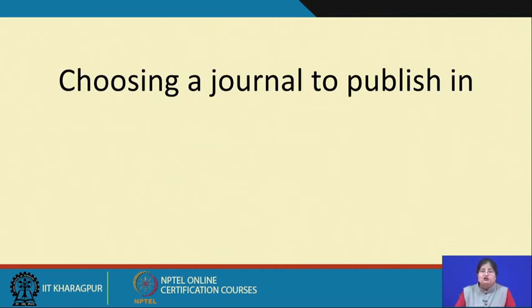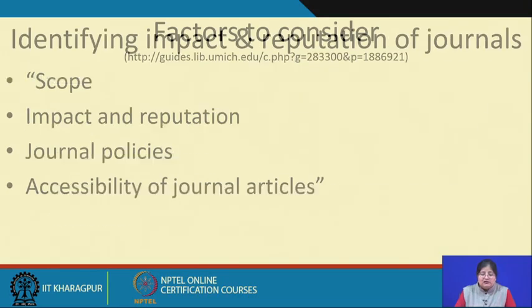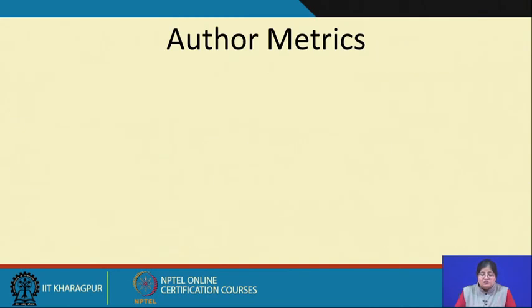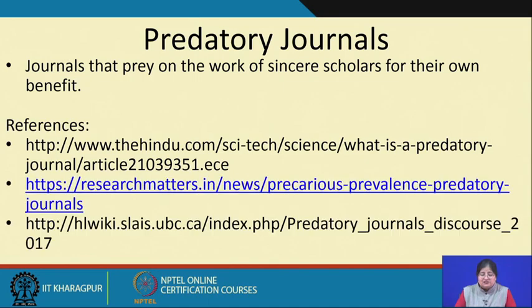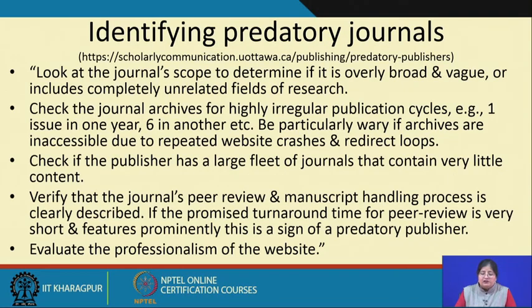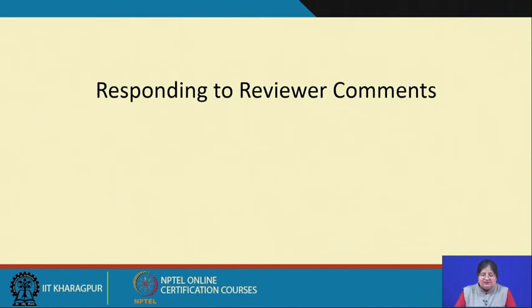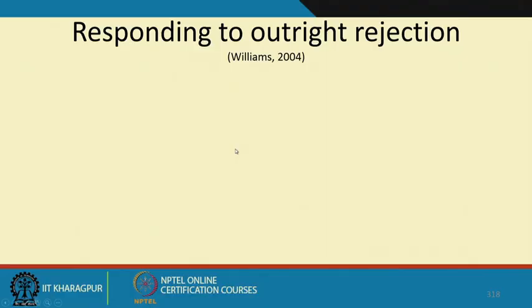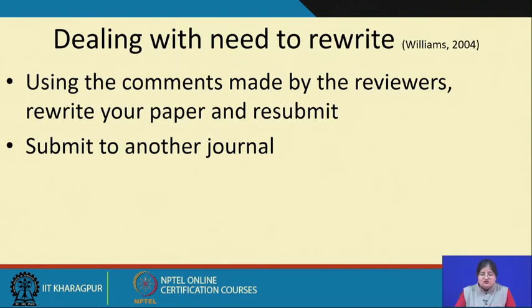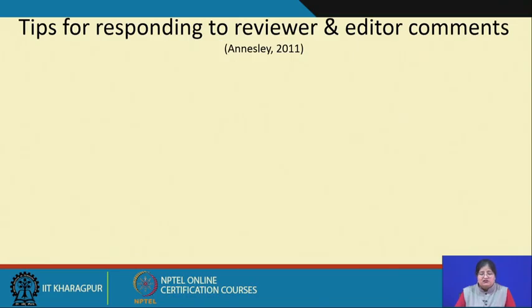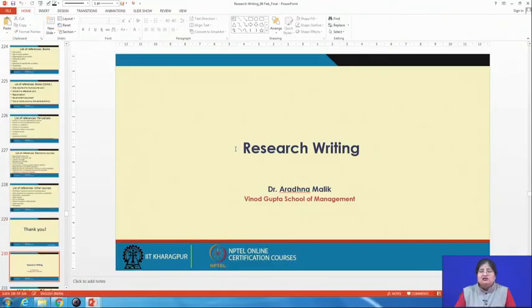Then we moved on to choosing a journal to publish in — factors you could consider, identification of impact and reputation of journals, the metrics, and websites where you can find these metrics. We talked about author metrics and had a discussion on predatory journals, how you can identify them, and some lists of predatory publishers. The last lecture focused on responding to reviewer comments — assuming you submitted your paper and the reviewer has given you comments — the various types of reviews you can get and how you deal with those reviews: responding to major and minor revisions and submitting your responses.